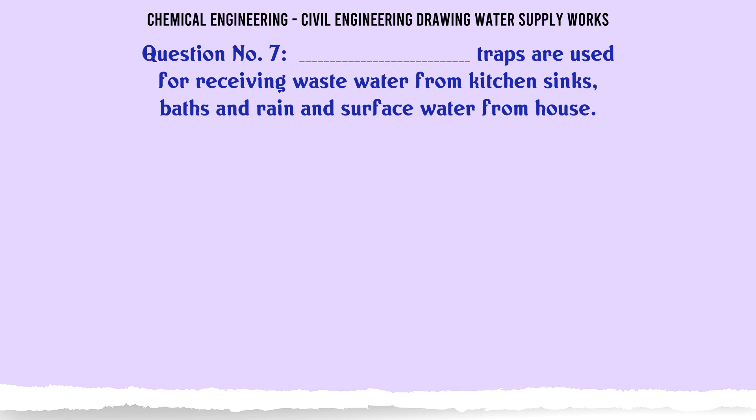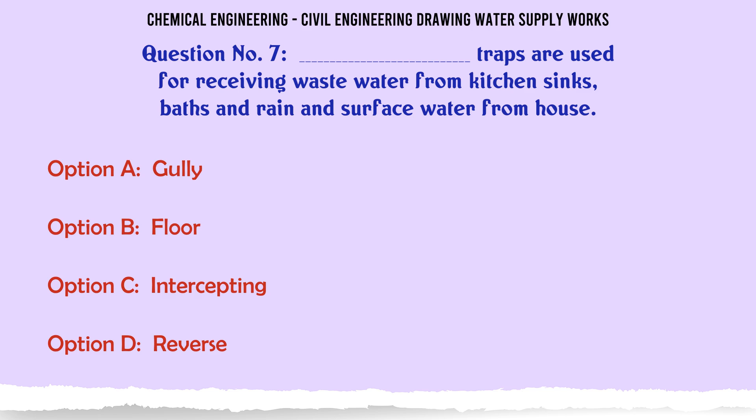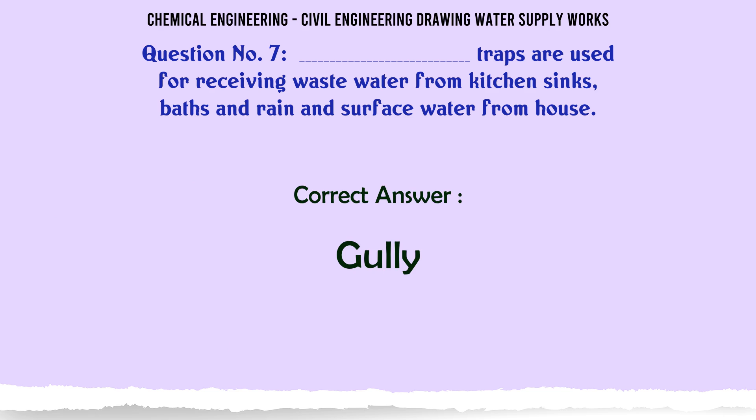Which type of trap is used for receiving waste water from kitchen sinks, baths, and rain and surface water from a house? A. Gulley, B. Floor, C. Intercepting, D. Rivers. The correct answer is Gulley.